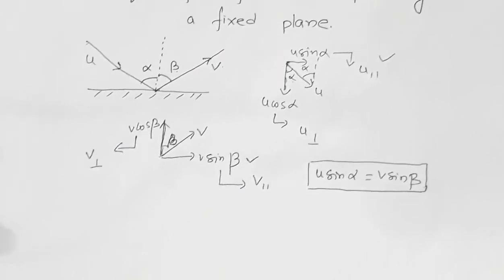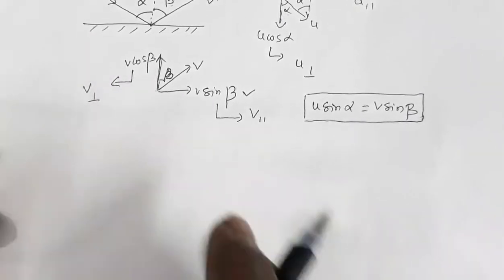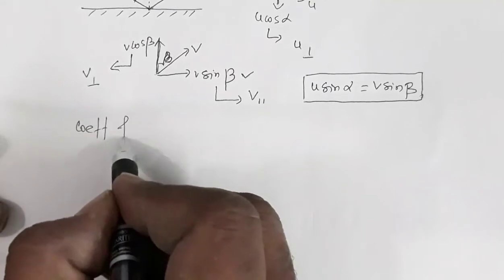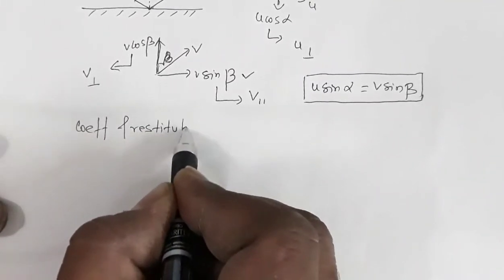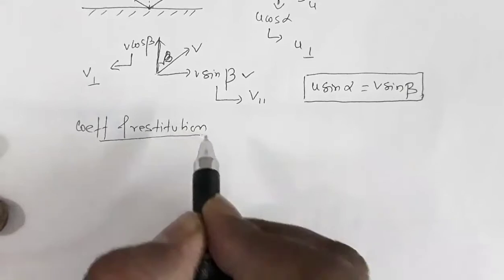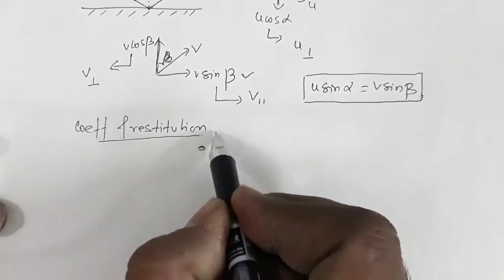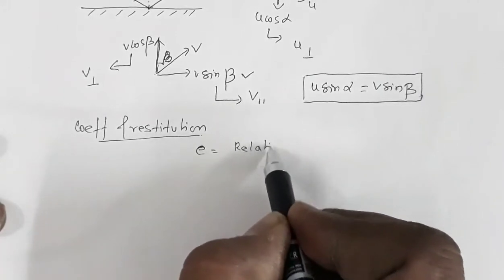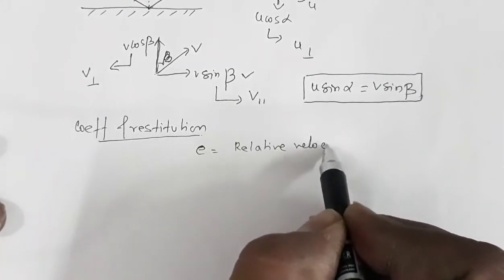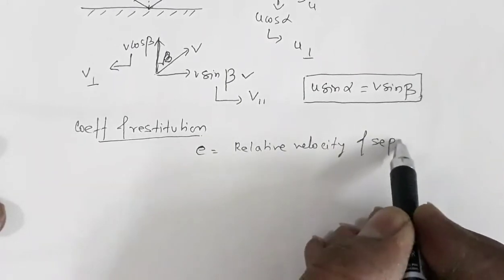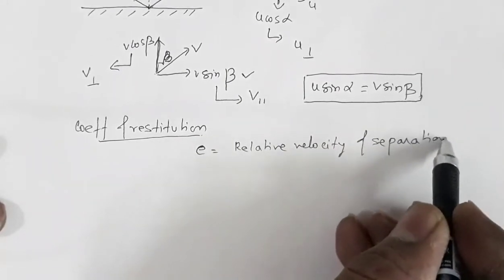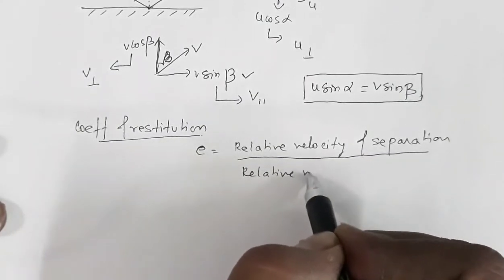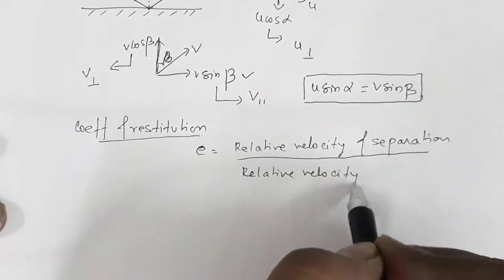Now there is a term called the coefficient of restitution, denoted by the symbol e. It is defined as the ratio of the relative velocity of separation to the relative velocity of approach.